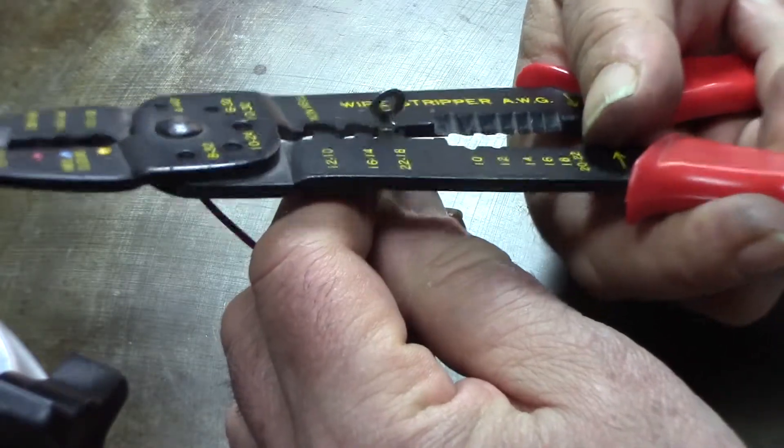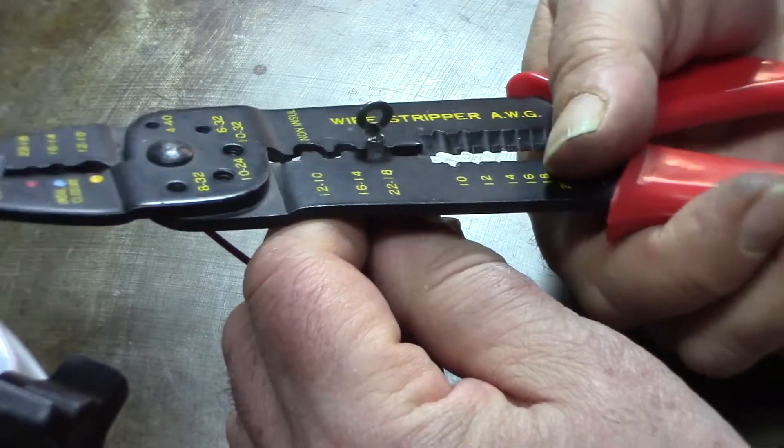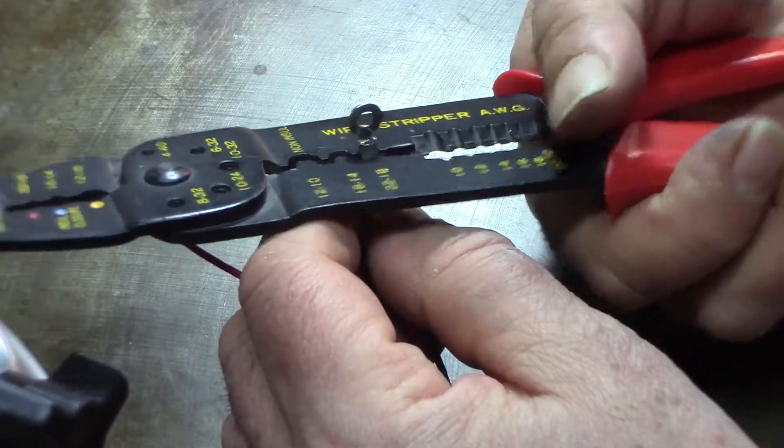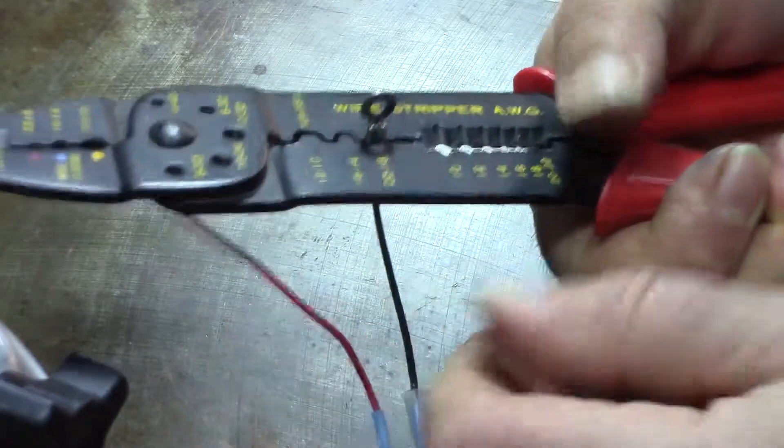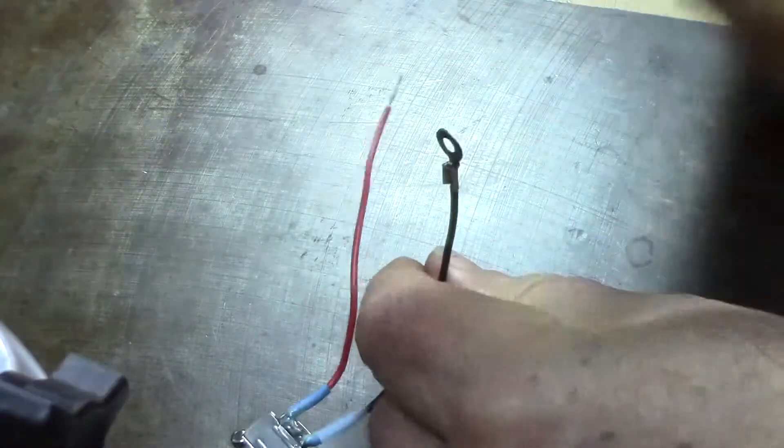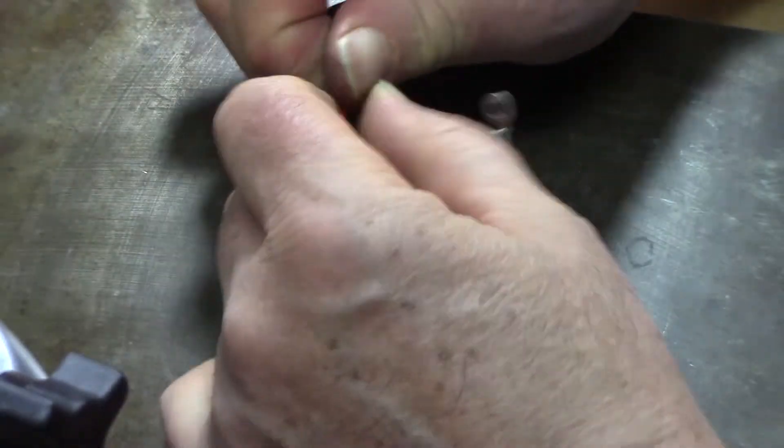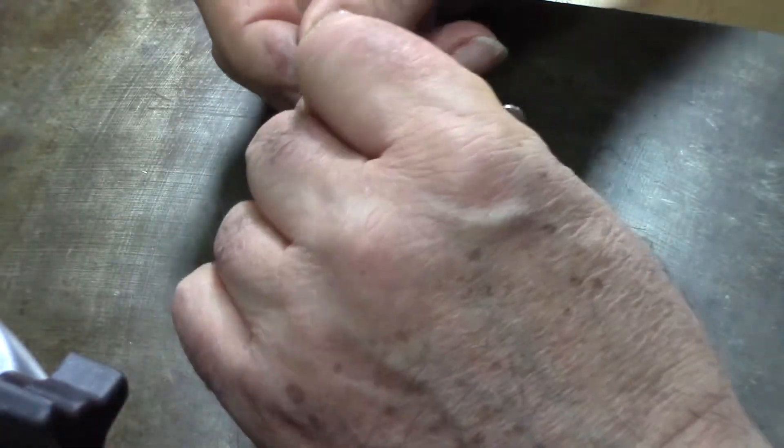This wire is number 18. It's not very thick. And the crimp of these things is relatively easy. They do make crimping tools with a higher mechanical leverage for larger wire sizes. I don't think it's necessary for this stuff.